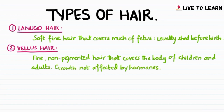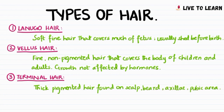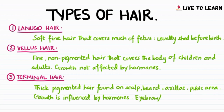Vellus hair growth is not affected by hormones. The third type is terminal hair. These are thick, pigmented hair found on the scalp, beard, axilla and pubic area, and their growth is influenced by hormones. Eyebrow and eyelash hair are also terminal hair.